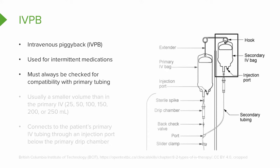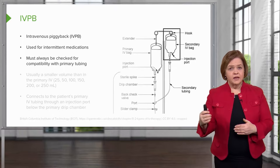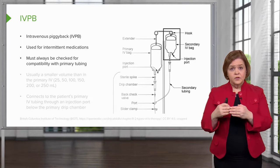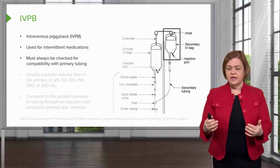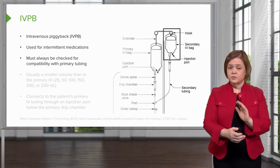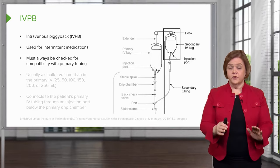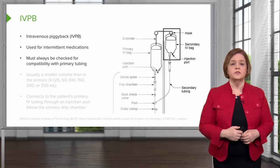You always want to make sure you work with your pharmacist to ensure that whatever medication you're hanging in that secondary bag or IV piggyback is compatible with the solution in the primary IV. This is really important, because if you hang an IV piggyback that is not compatible with your primary solution, it could cause a precipitate or a drug interaction. If it causes a precipitate, that goes right into the patient and could cause problems with clots. Make sure the medications are compatible and won't work against each other.